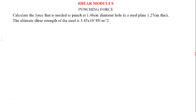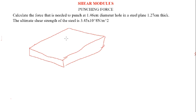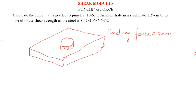Next, we want to find the force needed to punch a hole in steel. Whether you punch a round hole, a square hole, or some other form through a given thickness of metal, the goal is to find the force required. The punching force equals the perimeter multiplied by the plate thickness, multiplied by the shear strength.